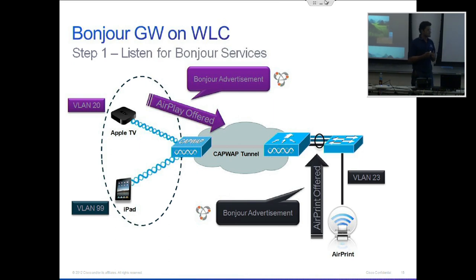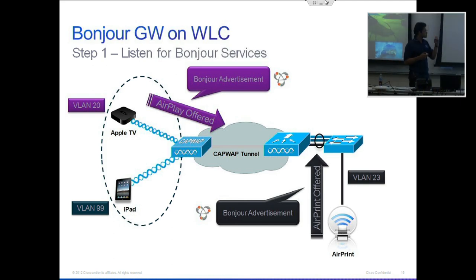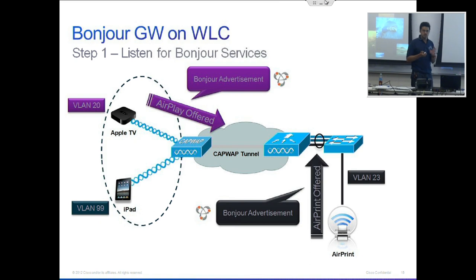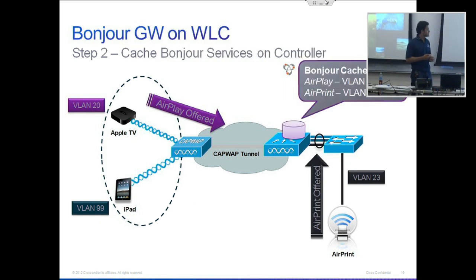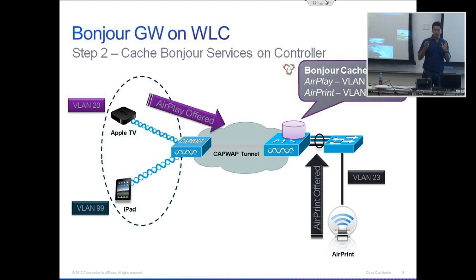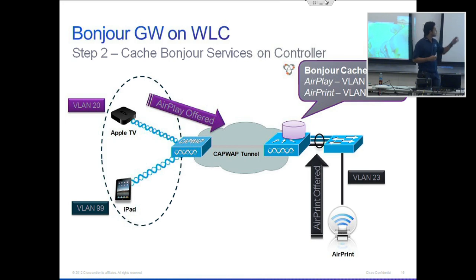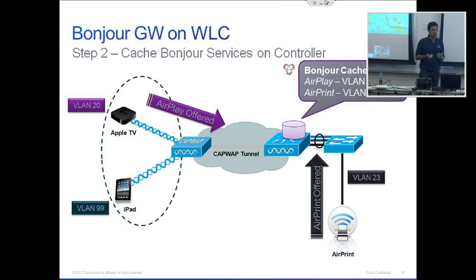For the Bonjour protocol, every Apple TV or every AirPrint printer that comes on a network sends a Bonjour service record. This service record is sent over multicast within a local VLAN. What the controller does is it actually caches all these entries. So as you can see, we have a wired printer and an Apple TV over a wireless network — both these services go to the controller and the controller caches them. Now the controller knows there is an Apple TV on VLAN 20 and an AirPrint printer on VLAN 23.